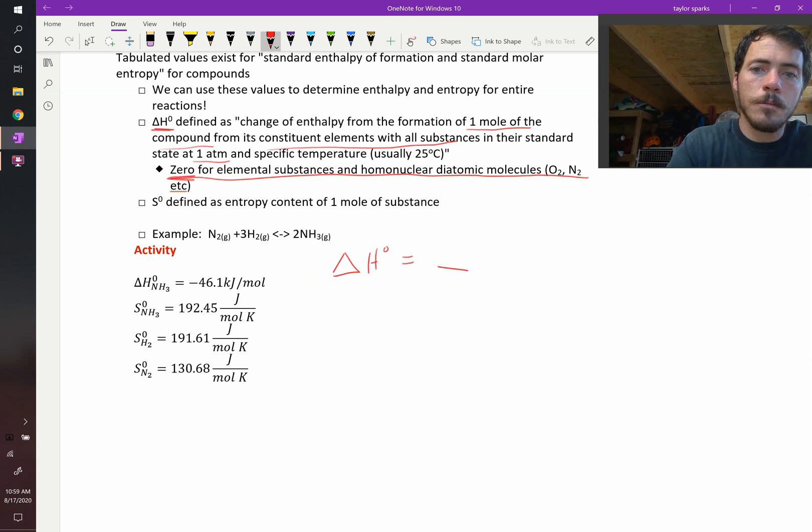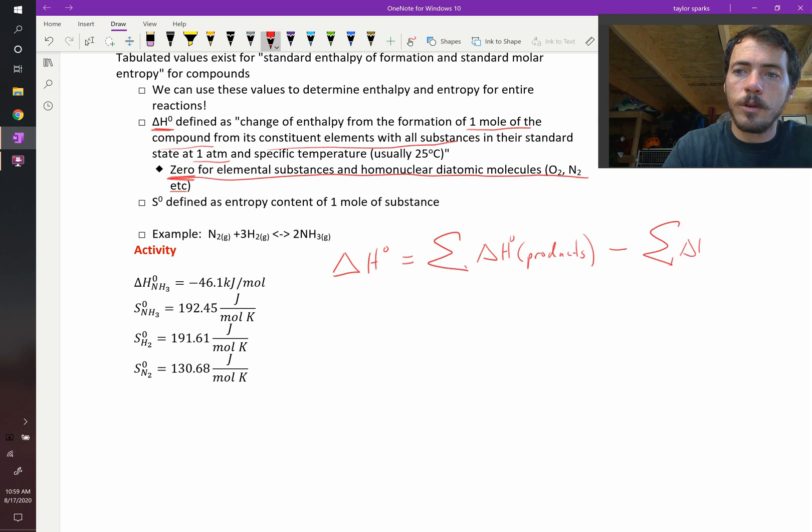That's going to be equal to the sum, so that's the summation symbol of the products. So we're going to calculate these for the products. And then we're going to subtract from that the sum of the change in enthalpy or the formation enthalpies of the reactants.